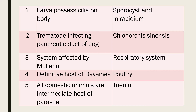Question 3: System affected by malaria. Answer: Respiratory system. Question 4: Definitive host of Davenia species. Answer: Poultry. Question 5: All domestic animals are intermediate hosts of which parasite? Answer: Taenia.